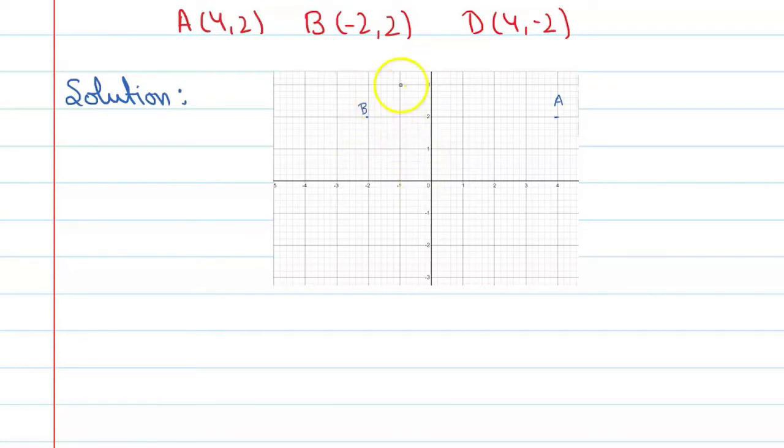And there is another point D, which is 4,-2. So this is 4 and this is -2. All right. So this is a point. Let me mark it first. This is point D and let me mark it D. So you can see that this point A is...